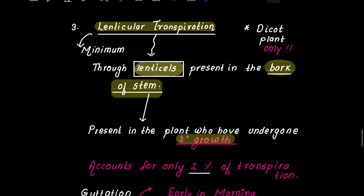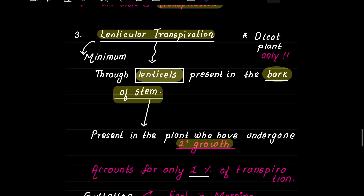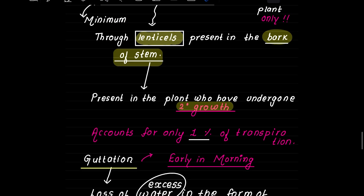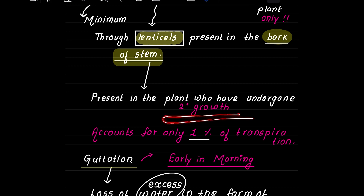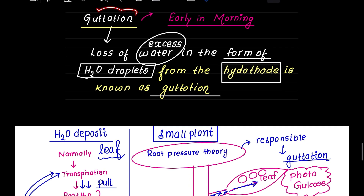The third type is lenticular transpiration, which occurs through lenticels in the bark of the stem during secondary growth. The bark formed during secondary growth provides protection but also allows removal of excess water.